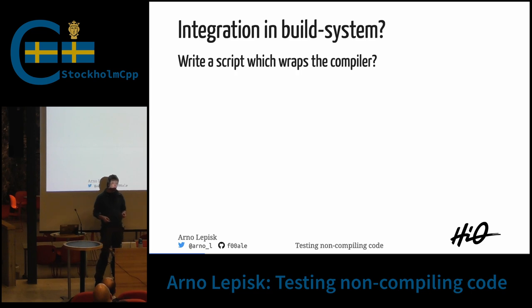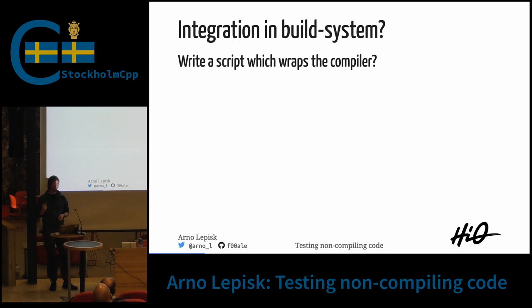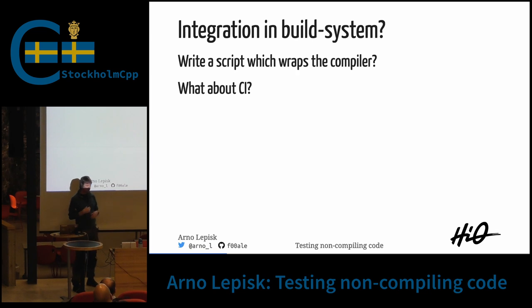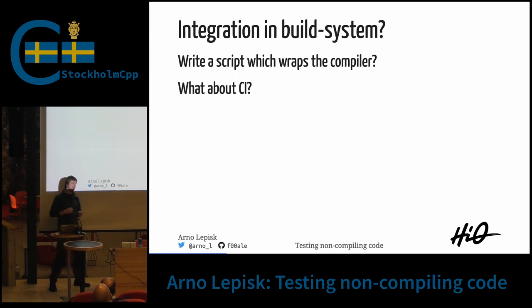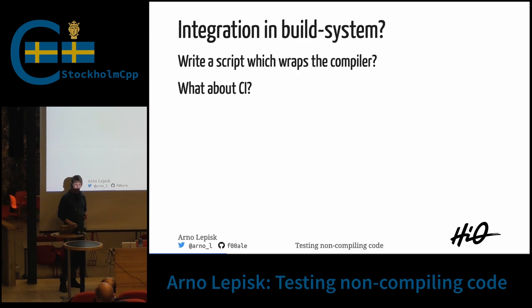This way was where I began. I was using a make system. I made a wrapper for the compiler that more or less just turned the return value around. You can do that, but then you need to start integrating this in a CI system and it gets complicated. When you start to have several compilers, you need a wrapper for each compiler and it quickly gets very complicated.